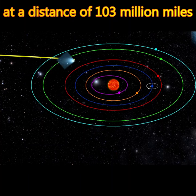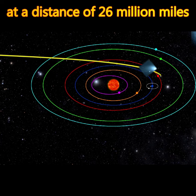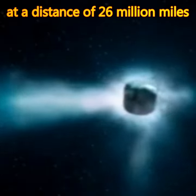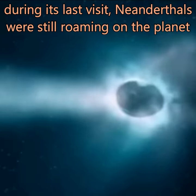At a distance of 103 million miles, and the closest approach to Earth will be on 1st of February 2023, at a distance of 26 million miles. This particular comet takes about 50,000 years to orbit the Sun.